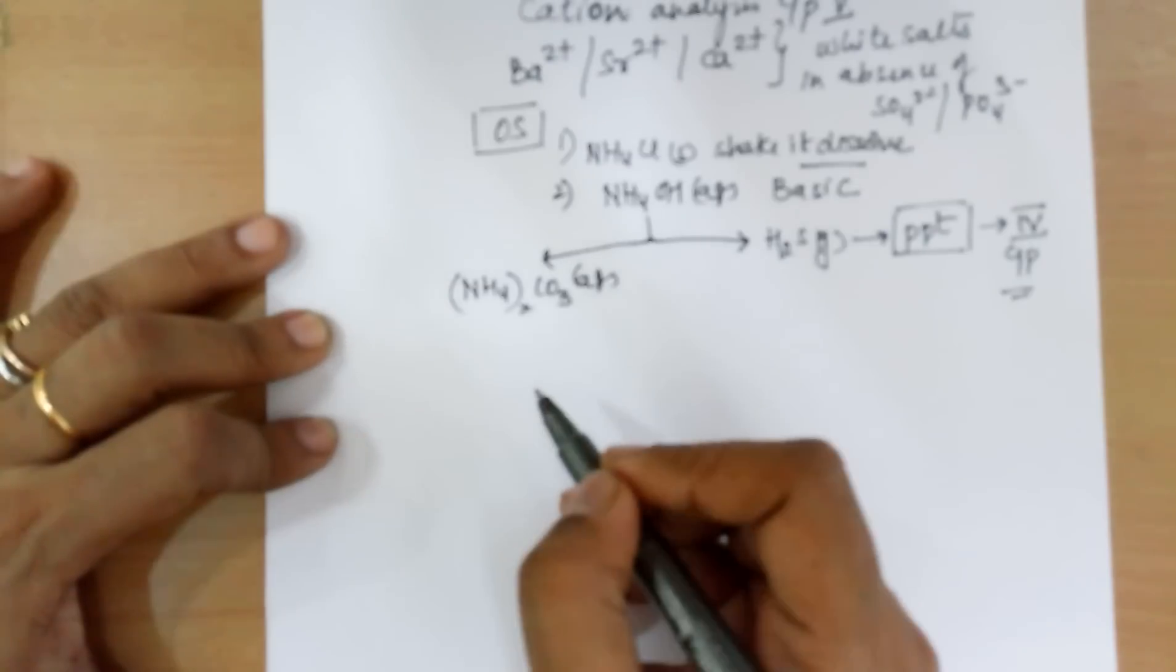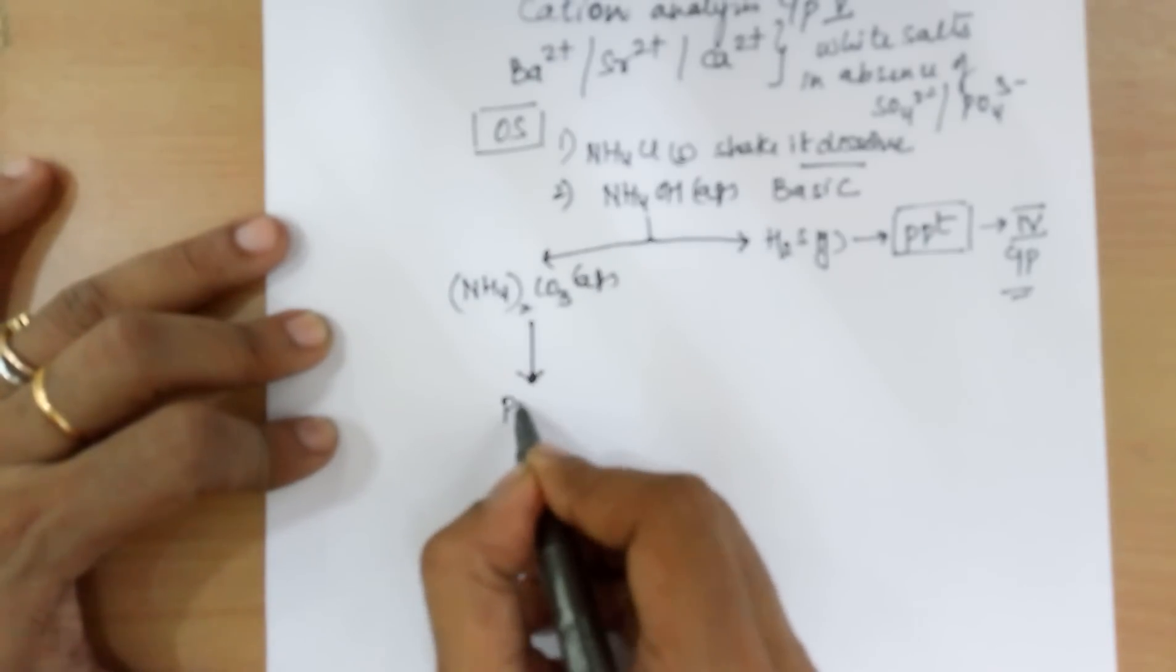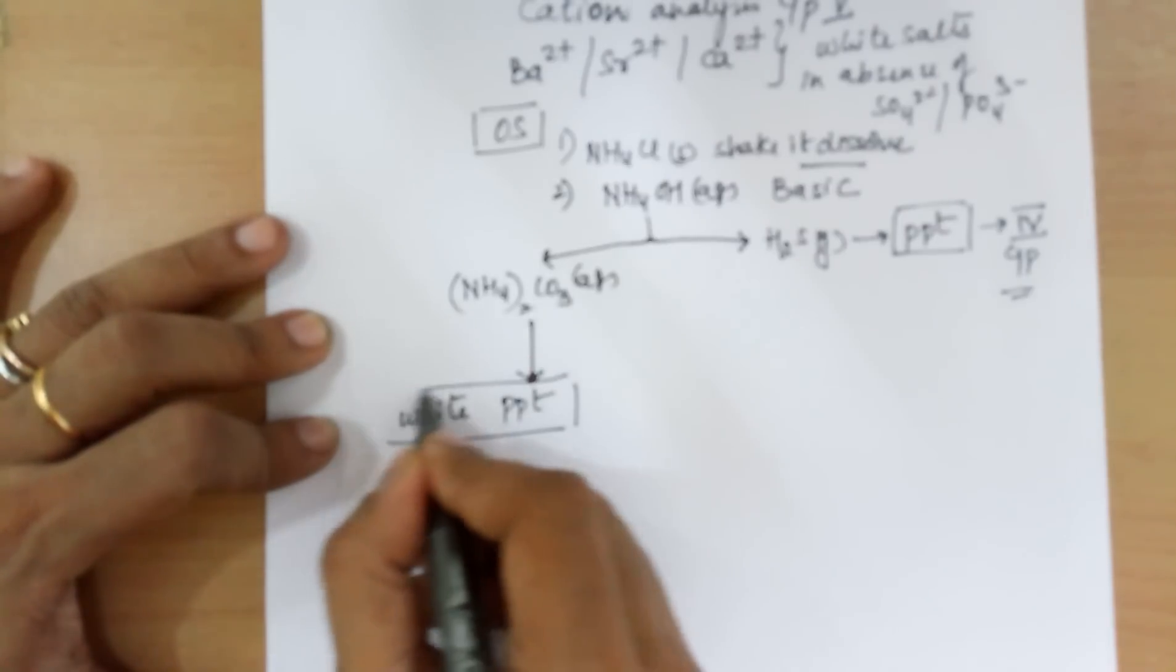On addition of ammonium carbonate solution, if you get a PPT, white PPT, that is indicative of group 5.